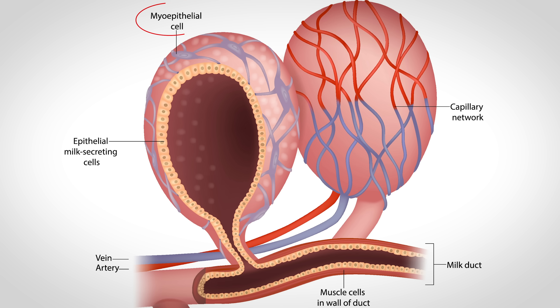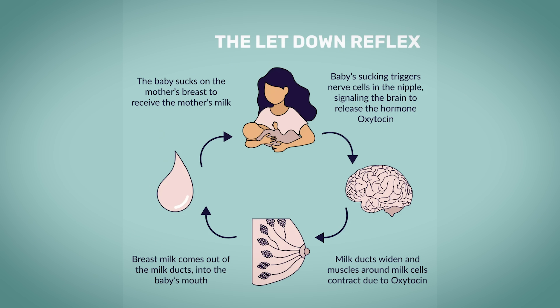This contraction causes the milk to move from the alveoli and into the ducts, so the milk can now be expressed and available to the baby — this is referred to as milk ejection or letdown. Notably, suckling on one breast does not just affect that one breast; it will also have the same effect on the opposite breast, so milk will be available in both.